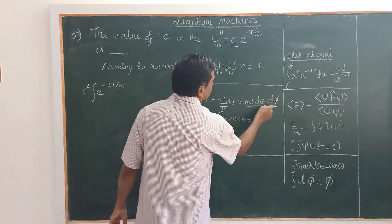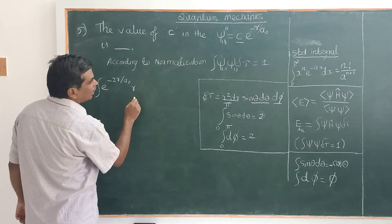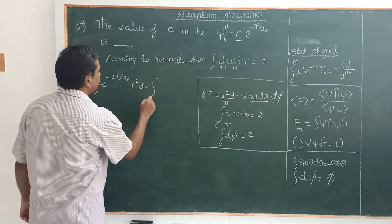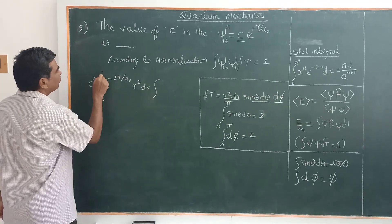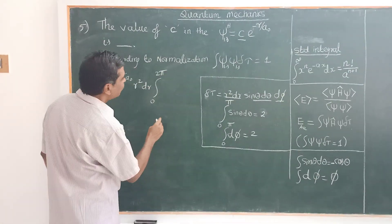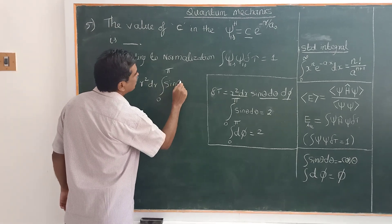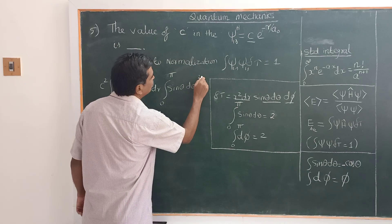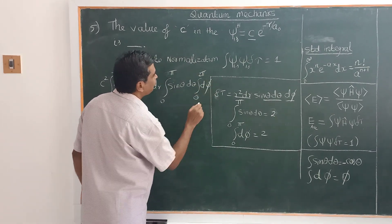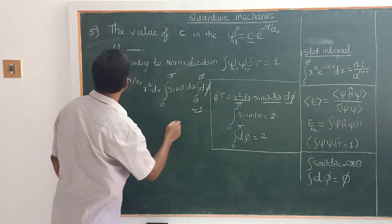So there are three terms, three integrals. On substituting this, you will get R squared dR, and the integral from 0 to infinity, and 0 to pi sin theta d theta, and 0 to 2 pi d phi. That is equal to 1 according to the Normalization Condition.